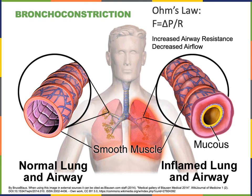Bronchoconstriction is a decrease in the diameter of the airways due to contraction of smooth muscle in the airway walls. It is stimulated by an intrinsic mechanism where low carbon dioxide levels inside the lungs trigger bronchoconstriction. Extrinsic mechanisms include the parasympathetic nervous system releasing acetylcholine from postganglionic fibers into the bronchiole smooth muscle. Inflammatory mediators like histamine released from basophils and mast cells also stimulate bronchoconstriction, which contributes to asthma and allergies.